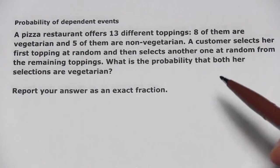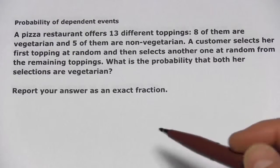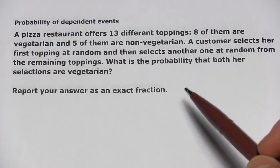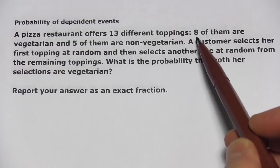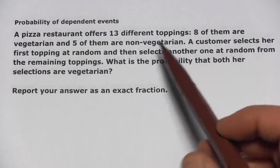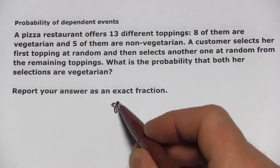As usual, when we have two events and we want to find out the probability of both of them happening, we're going to multiply, but they won't have the same probabilities. The first one, the probability of selecting a vegetarian topping, is 8 out of 13. That's the first one.